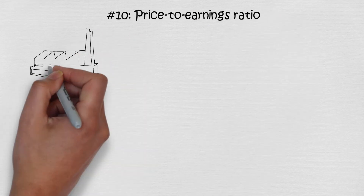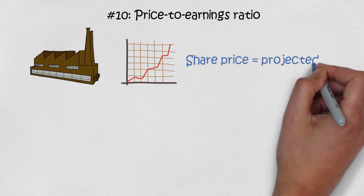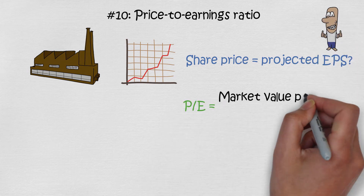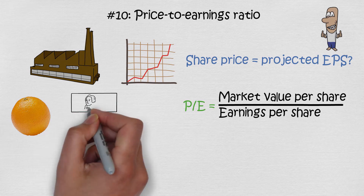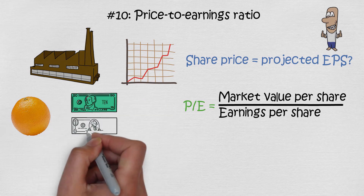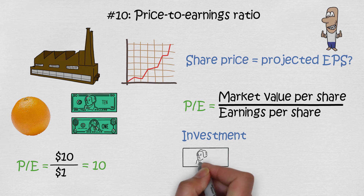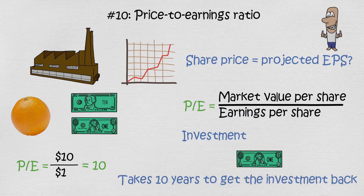Financial ratio number 10: price to earnings ratio. This ratio is used for valuing a company — it shows if the share price accurately represents the projected earnings per share. The formula is market value per share divided by earnings per share. If Orange's share price is $10 and EPS is $1, the P/E ratio is 10. This means you are investing $10 for every dollar of earnings, and it should take 10 years to get your investment back. The lower the P/E ratio, the faster you get your investment back.